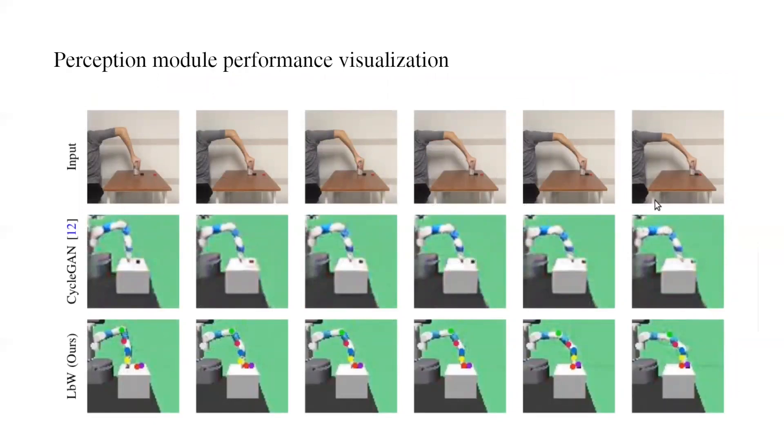Given a human video as input in the first row, we present the CycleGAN translation in the second row. In the third row, we visualize our translated images and the detected keypoints produced by the perception module. Our perception module accurately detects the robot's arm pose and the location of the interacting object.